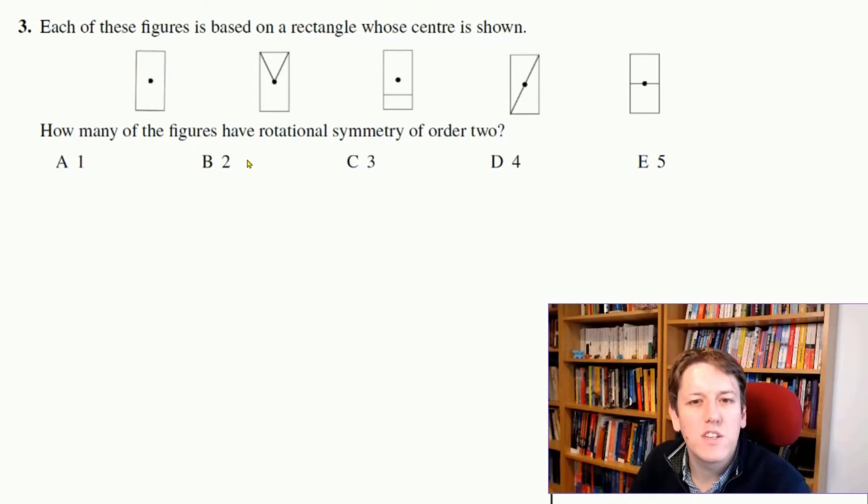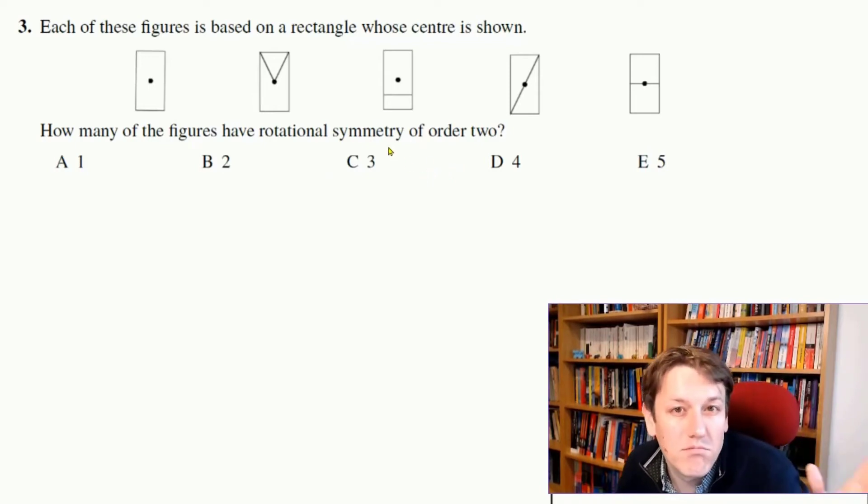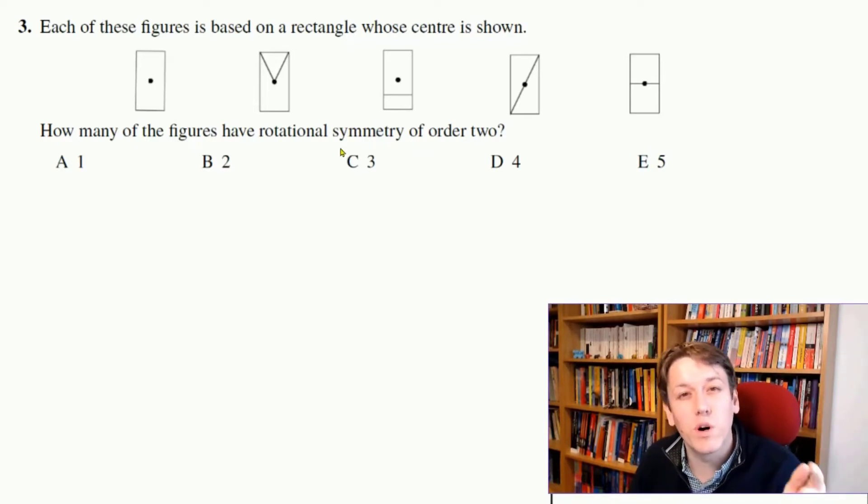So we want to know how many of these shapes have rotational symmetry of order 2. That means that when I rotate the shape, there'll be two times in a full rotation where it looks the same. So every shape has at least rotational symmetry order 1, because when I come all the way back to the start, it looks the same as where it is at the start. So if rotational symmetry of order 2, there's got to be one other time when I do that rotation that it looks the same as when it starts.